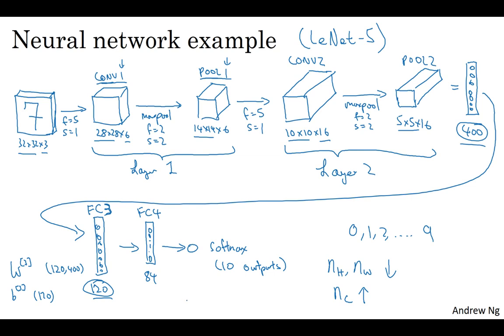And another pretty common pattern you see in neural networks is to have conv layers, maybe one or more conv layers, followed by a pooling layer, and then one or more conv layers, followed by a pooling layer. And then at the end, to have a few fully connected layers and then followed by maybe a softmax. And this is another pretty common pattern you see in neural networks.